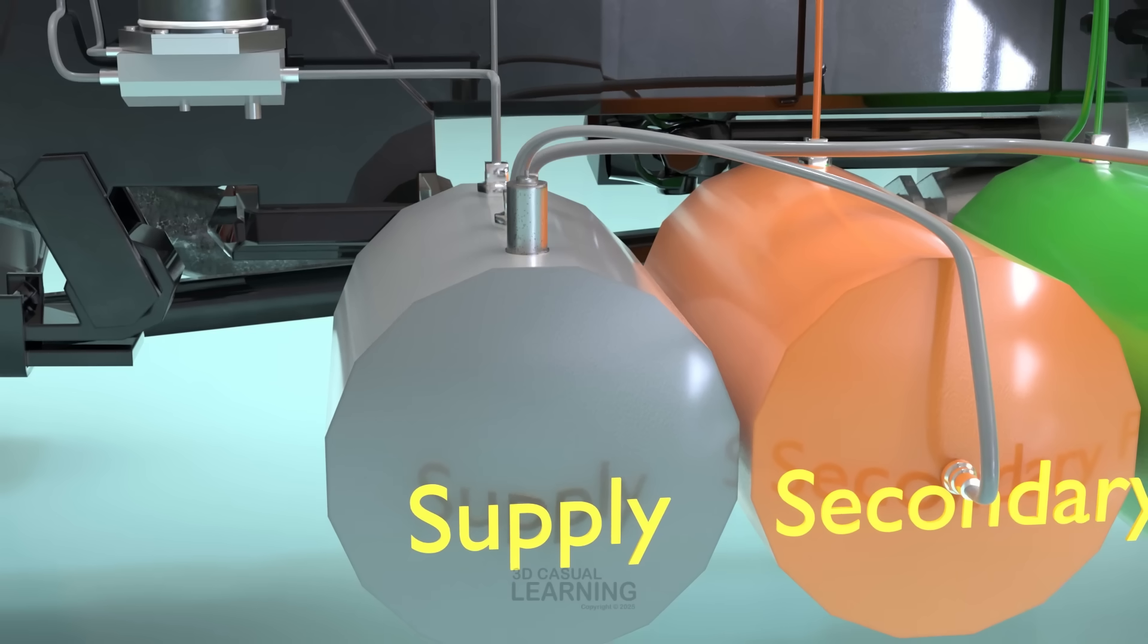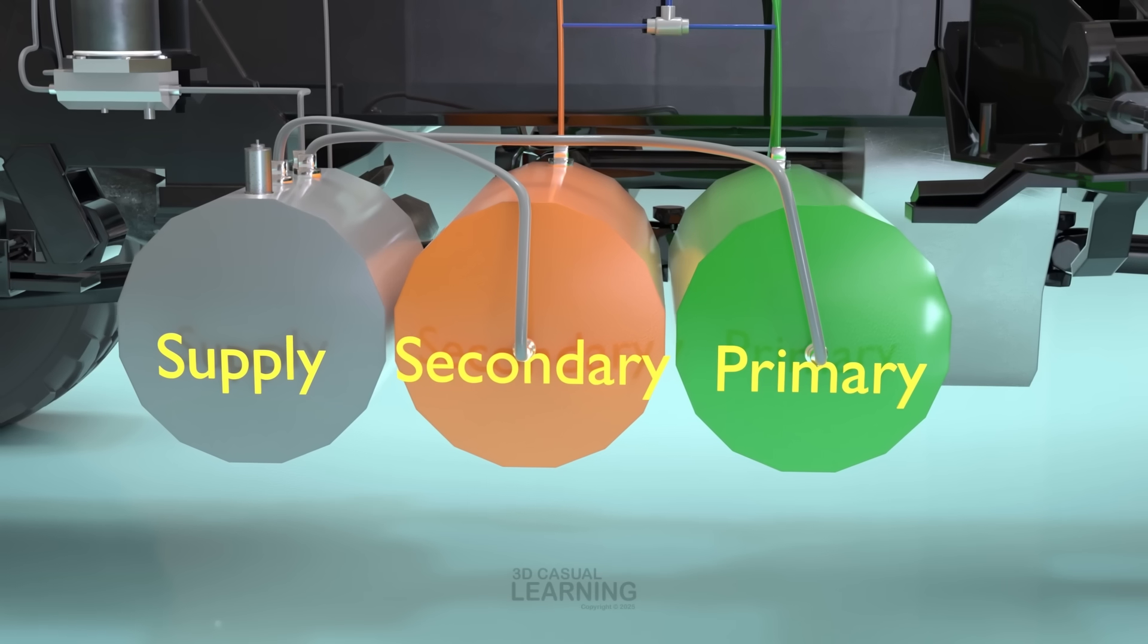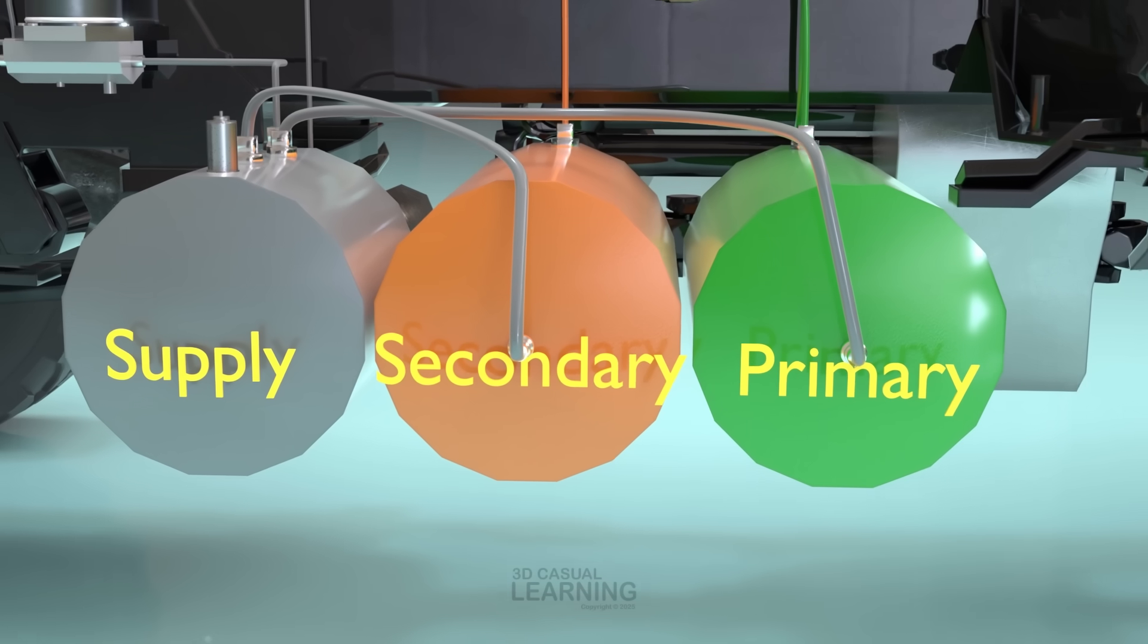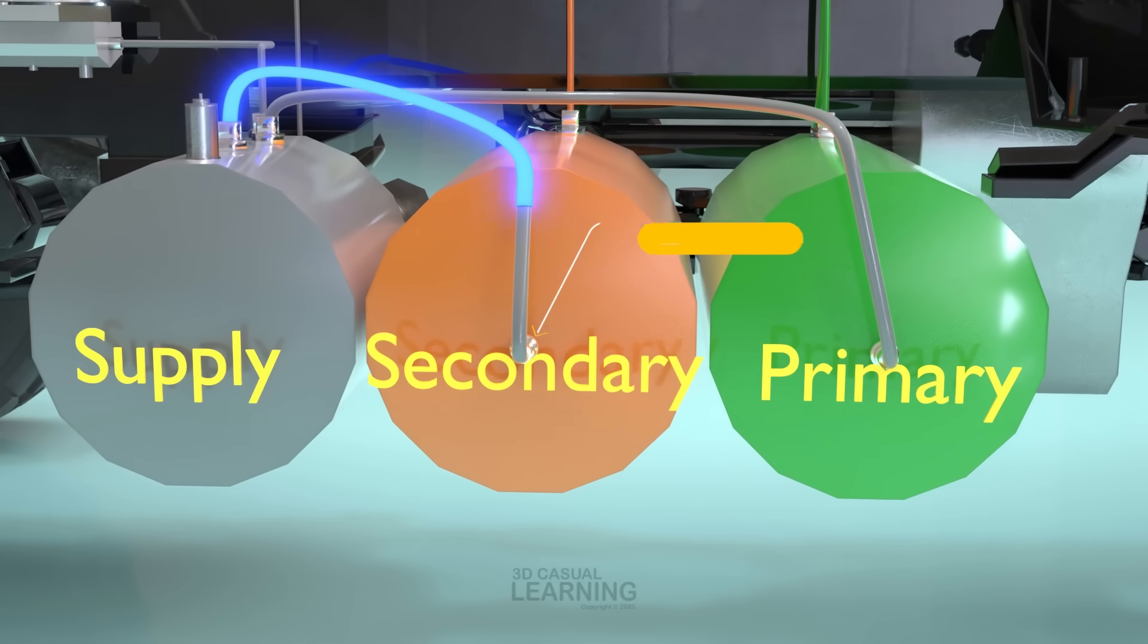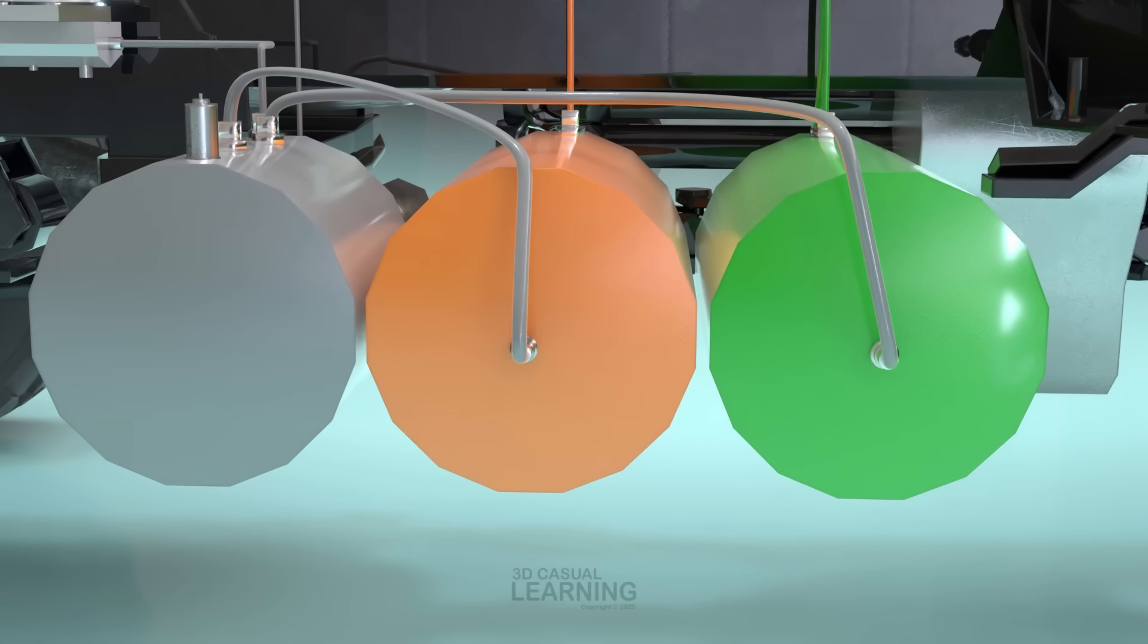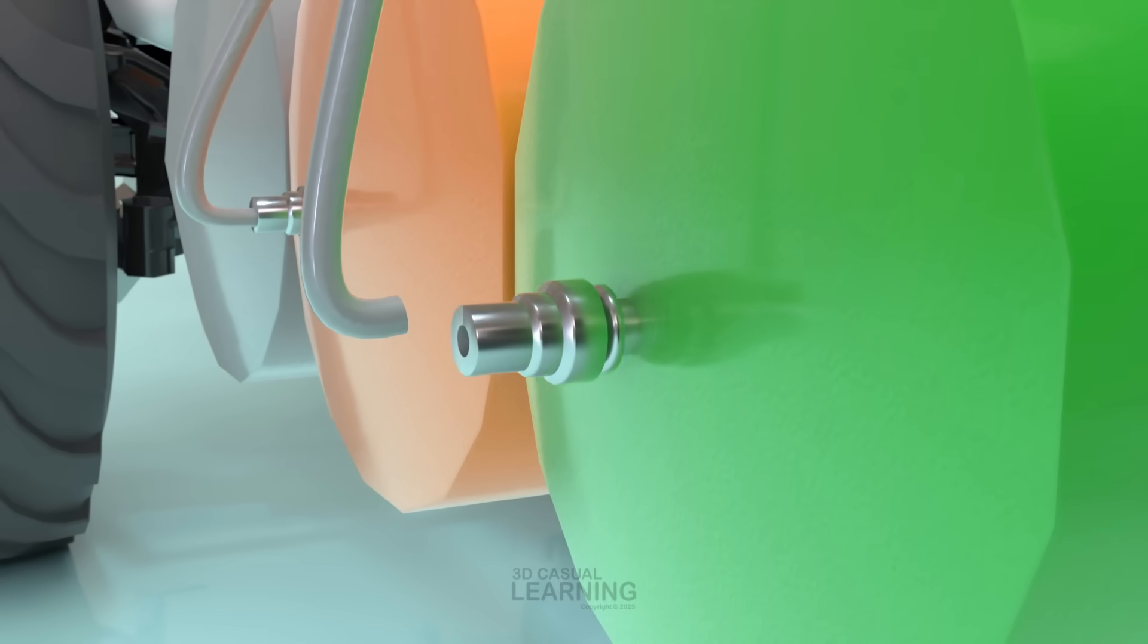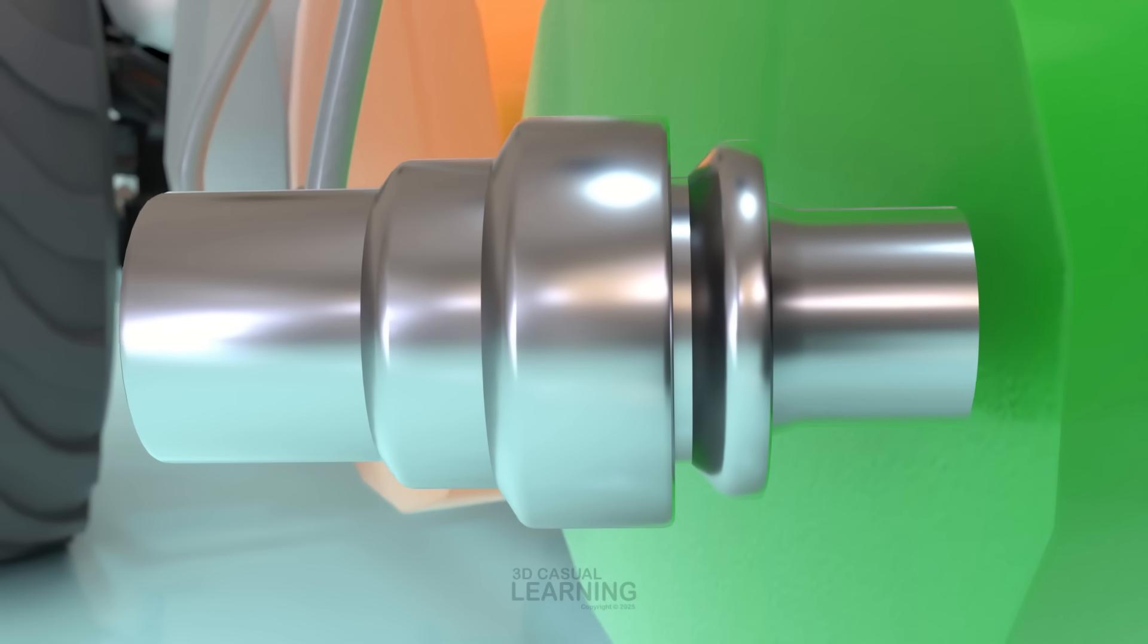At the heart of a dual-circuit brake system are three key reservoirs. The supply reservoir. The primary reservoir for the rear axle brakes. And the secondary reservoir for the front axle brakes. These reservoirs are interconnected but protected from one another by a single check valve. The supply reservoir is the main source of compressed air. From here, air flows through the check valve into the primary and secondary service reservoirs. The check valve allows air to move in only one direction, from the supply reservoir to the service reservoirs, while preventing any reverse flow. This is crucial in case the supply reservoir pressure drops due to a malfunction or leak.